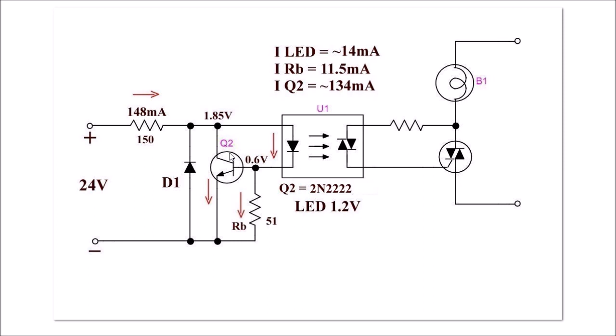Q2 now will have a collector current of approximately 134 milliamps. So the vast majority of current is shunted through Q2, and most of the voltage is going to be dropped on the 150 ohm resistor, which should be two or three watts because it will get warm at this point. So that's how we're able to go from 3 to 32 volts on the input of a solid state relay by using a shunt current regulator circuit.